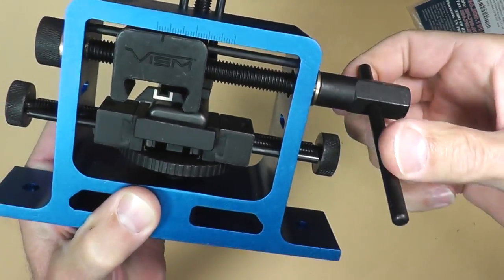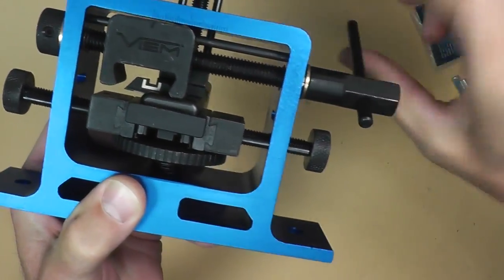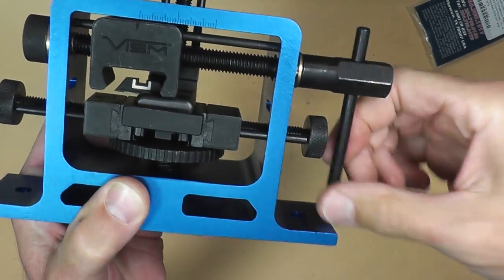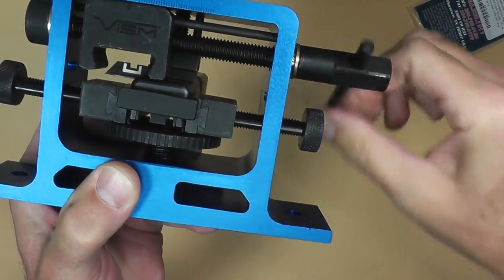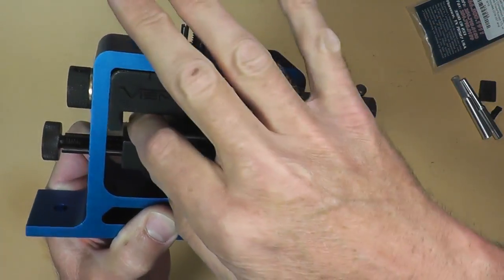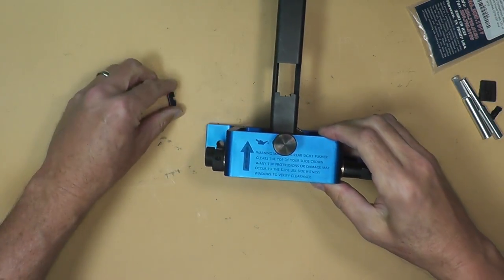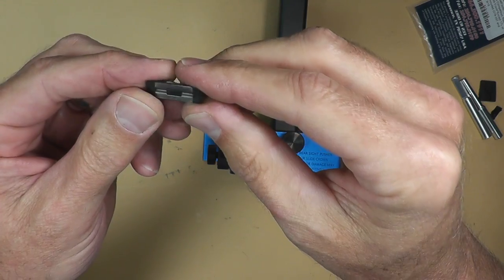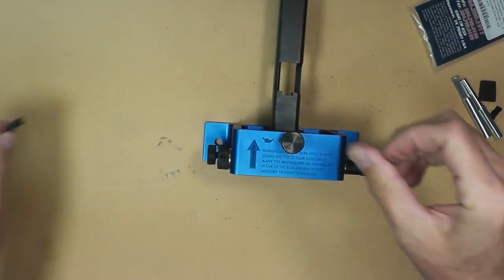This is a whole lot easier than the Beretta was. All right. So there's our little polymer rear sight. So we'll set that off to the side.